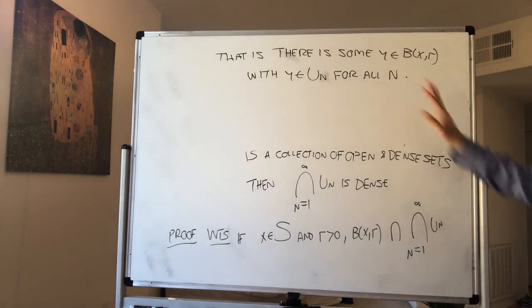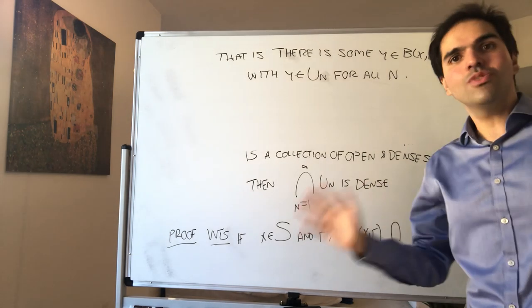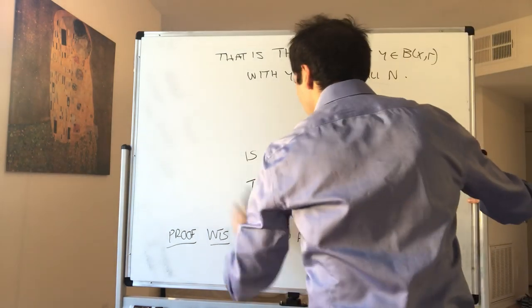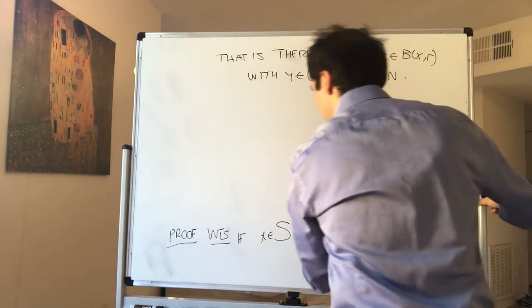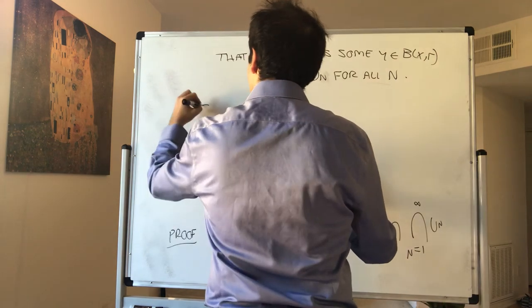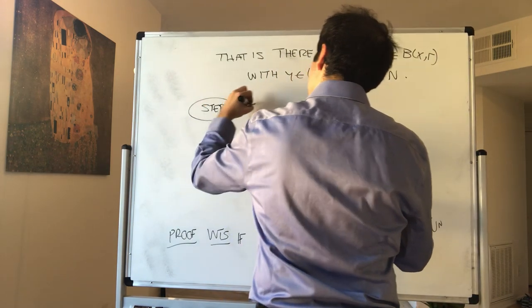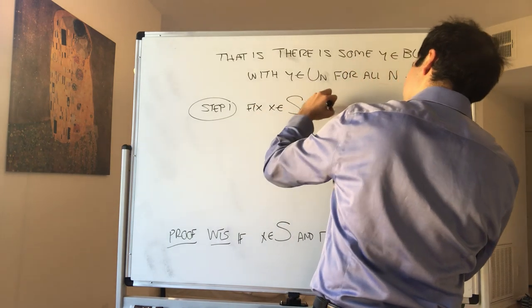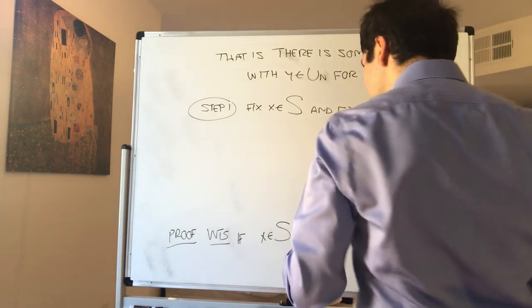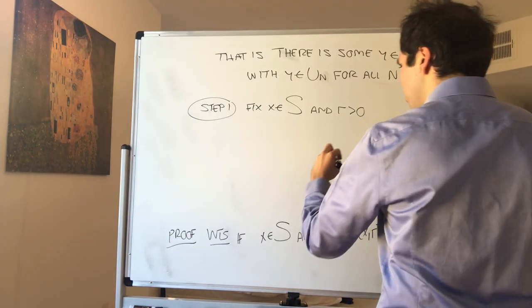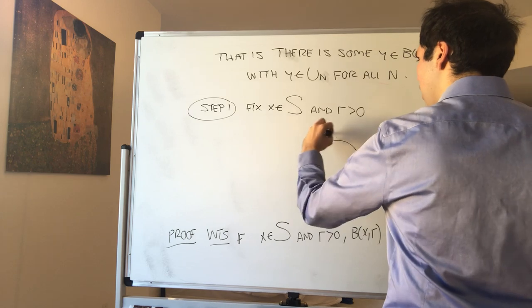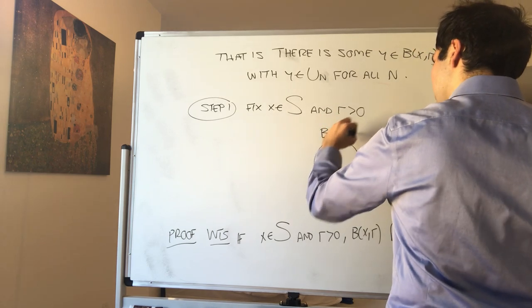And the way we're going to construct this y is with the limit of a sequence which we'll define now. So step one, if you'd like, fix x in S and r positive, and consider the following. Consider the ball centered at x and radius r.